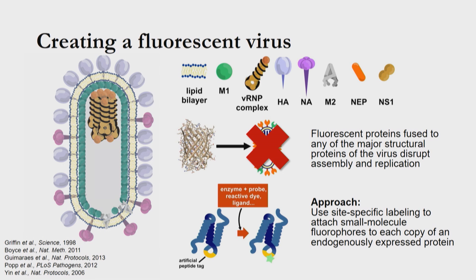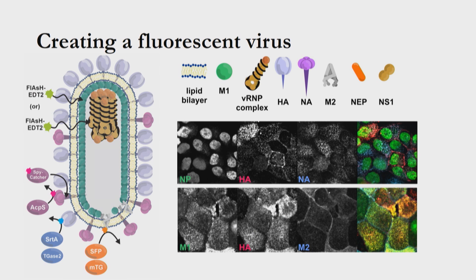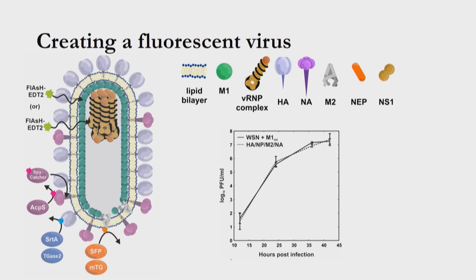An alternate approach that works is site-specific labeling — attaching small molecule fluorophores to specific sites engineered in viral proteins that are expressed endogenously off the viral genome. We use 5 to 10 amino acid tags placed at the N or C terminus of a protein or inside internal loops. These tags are recognized by enzymes that conjugate a small molecule fluorophore, or can be bound directly by a fluorescent ligand. Since multiple strategies for this type of site-specific labeling exist, we can mix and match to orthogonally label multiple structural proteins within the virus, recovering viruses that harbor multiple tag versions but show the same replication kinetics as the parental strain.